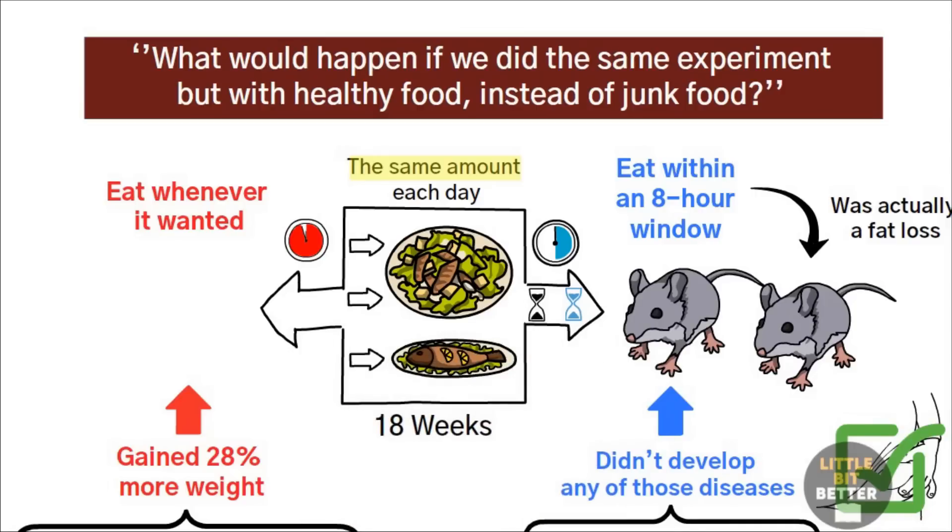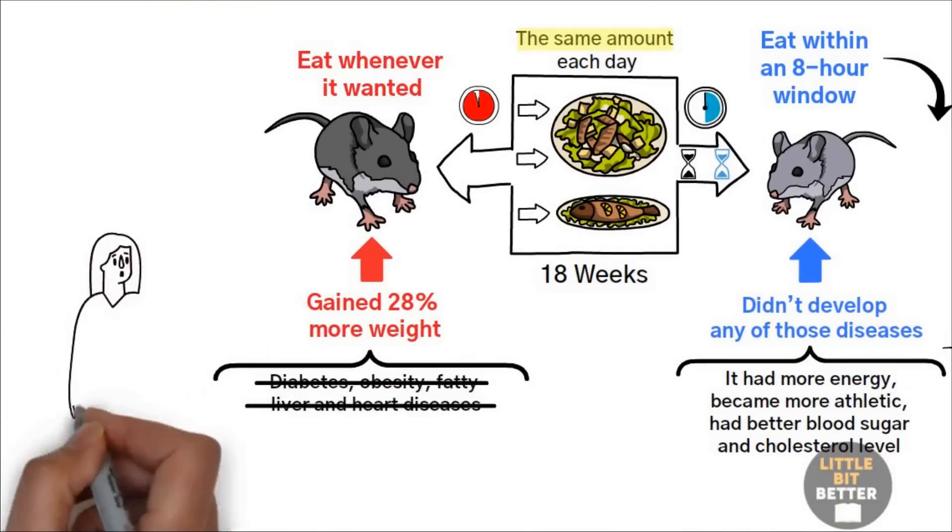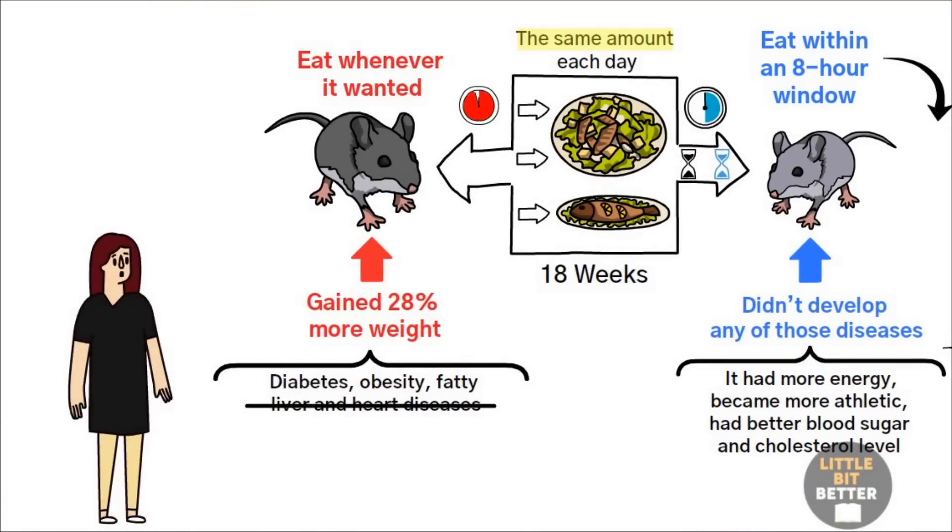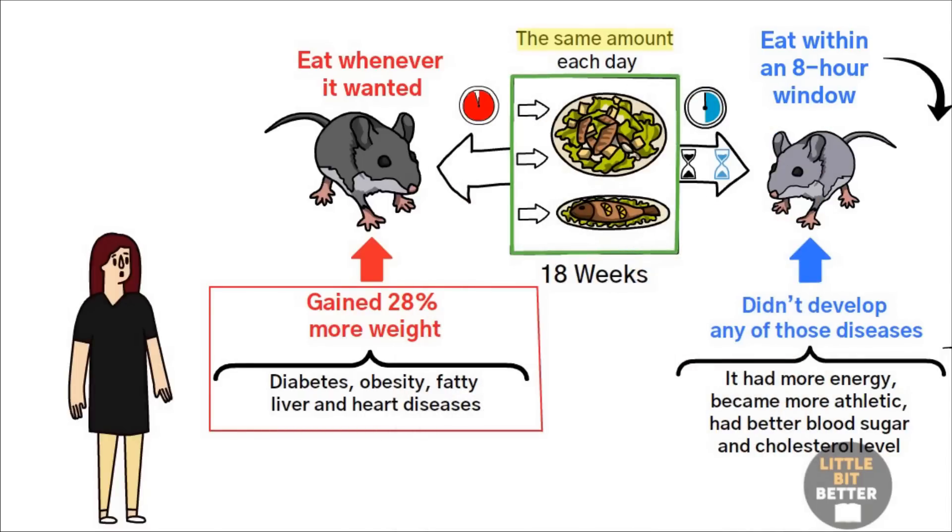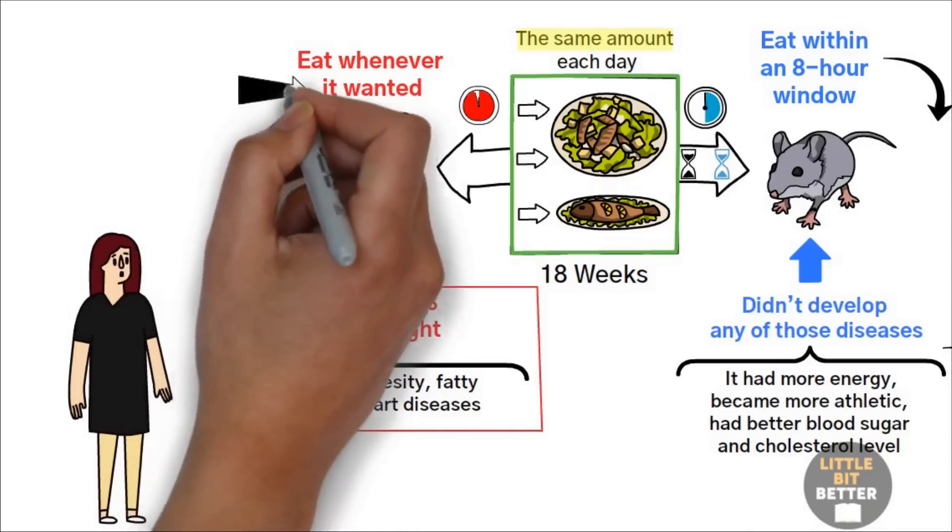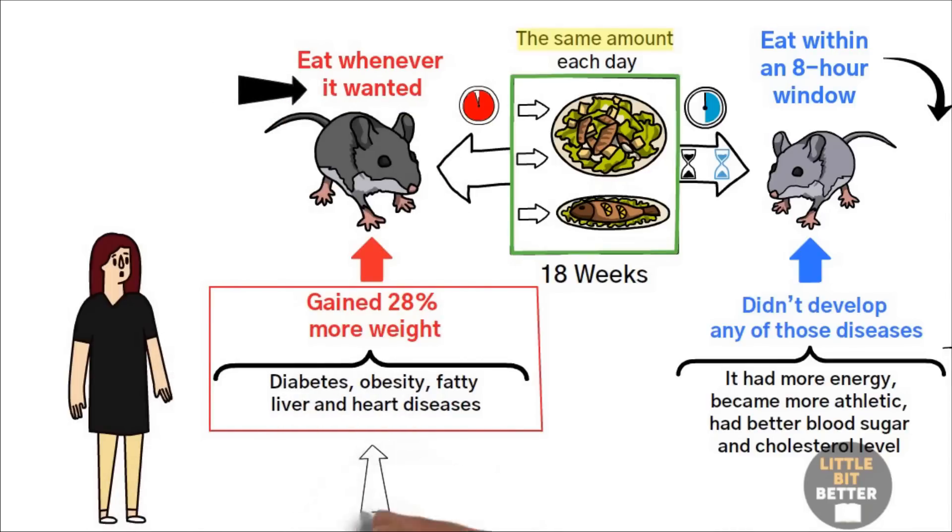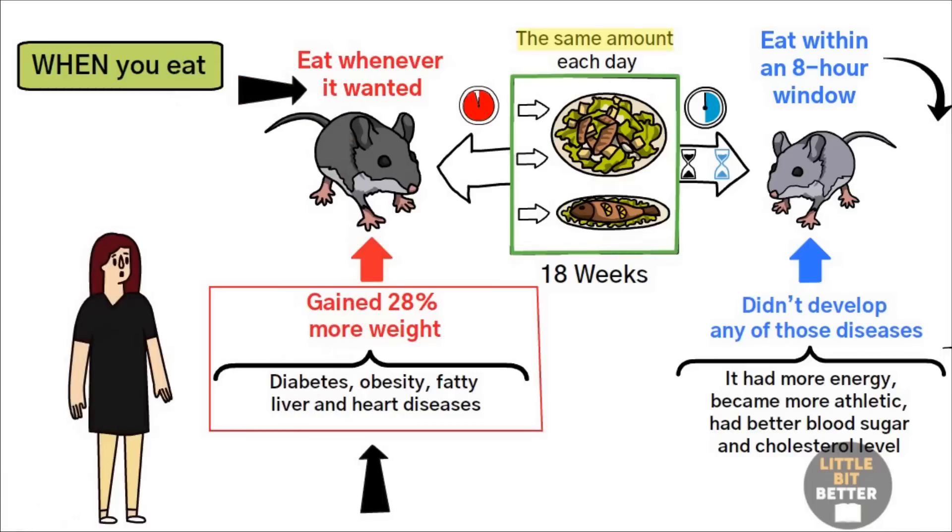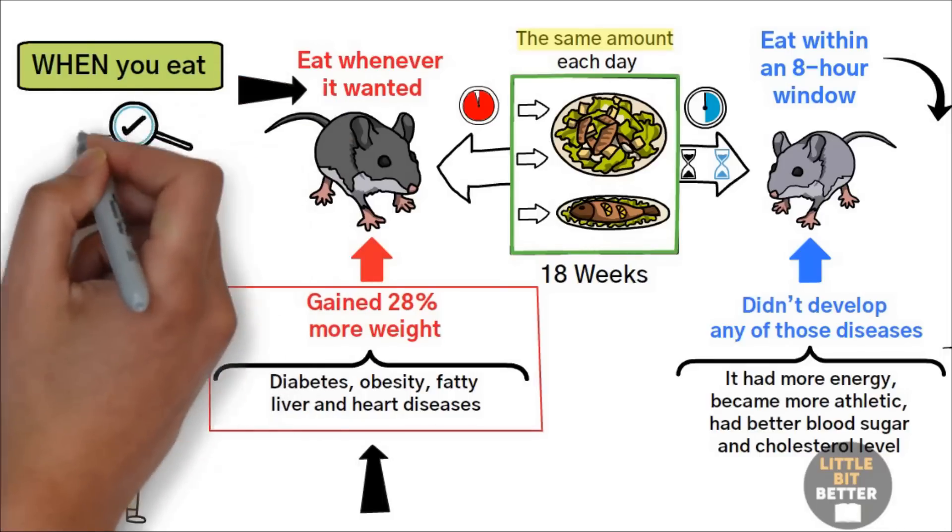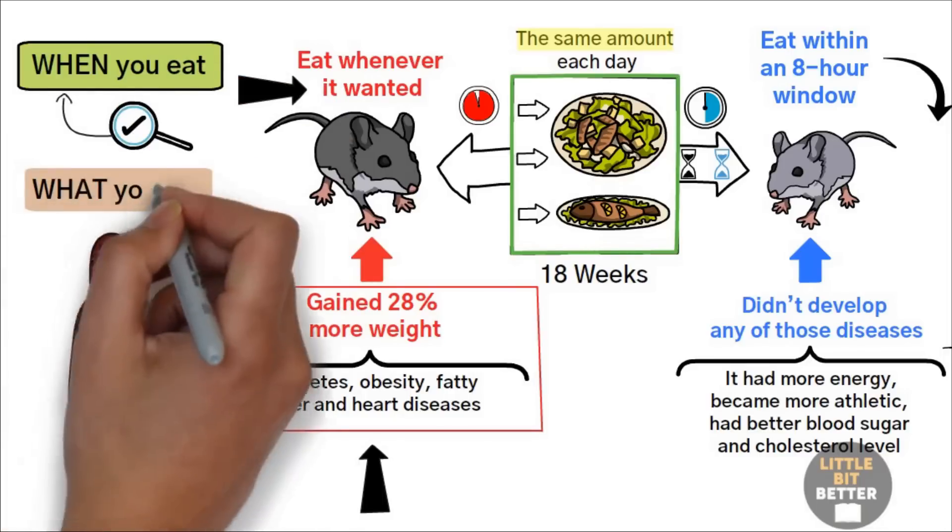The mouse that ate in an unlimited window started to gain weight despite the fact that the food was healthy. This was quite mind-blowing for me personally because I thought that weight gain and all those diseases wouldn't happen once food is healthy. But experiments prove the opposite. Regardless of how healthy your diet is, eating on an unlimited window causes weight gain and creates diseases. This is revolutionary because it supports the concept that when you eat is as important or even more important than what you eat.